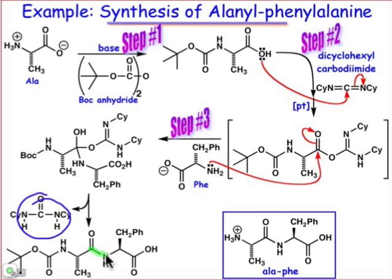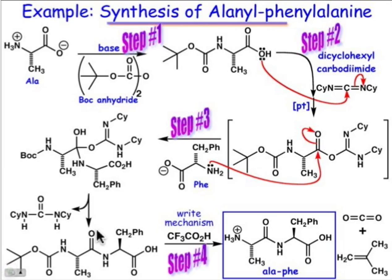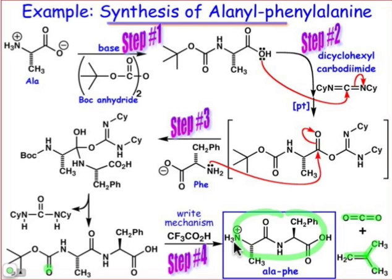All that needs to be done now is to unveil the amino group from the alanine side. We remove the t-butyl-oxycarbonyl (Boc) group using trifluoroacetic acid. You should be able to write this mechanism: protonate the oxygen, write a resonance form, and do an electrofugal dissociation step. Isobutylene is formed and carbon dioxide is lost after that elimination step. We end up making the desired unblocked amino group and the desired peptide bond of the Ala-Phe dipeptide.